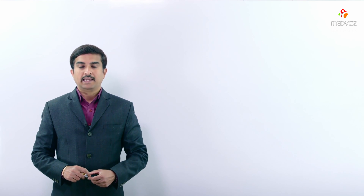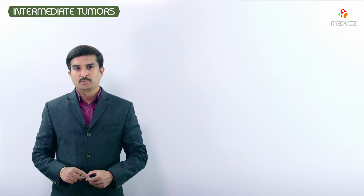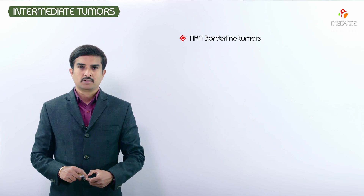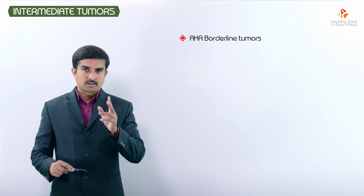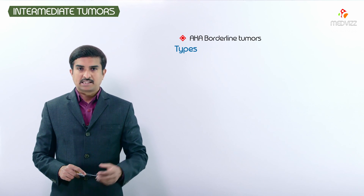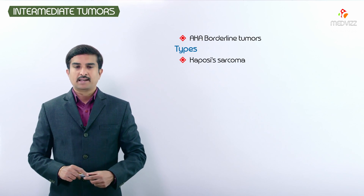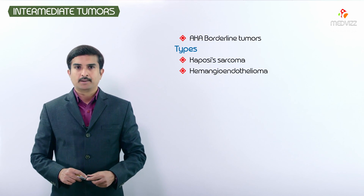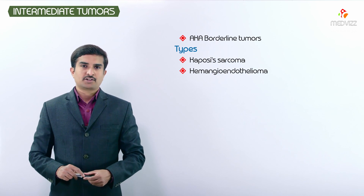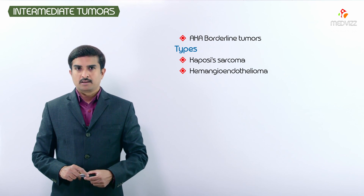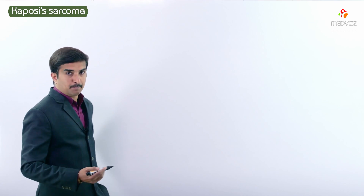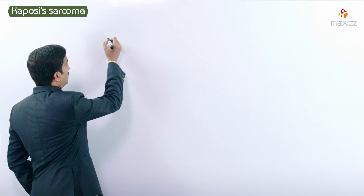We are discussing intermediate tumors, also called borderline neoplasms. There are two under this category: one is Kaposi sarcoma and the second is hemangioendothelioma. The topic of discussion for today is Kaposi sarcoma, so we will first see its definition.